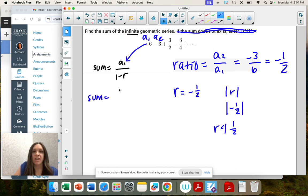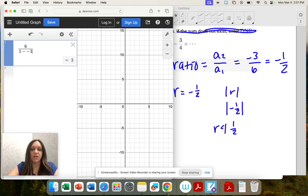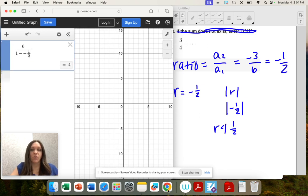So we can find the sum, and we're going to plug in our numbers. First term divided by 1 minus r, which equals 4.